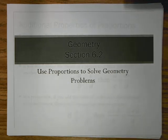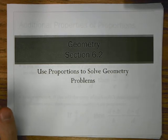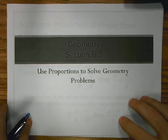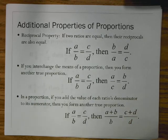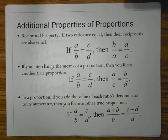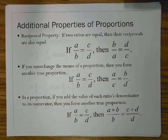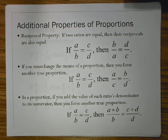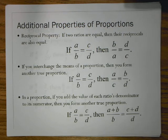We're looking at section 6.2, which is using proportions to solve geometry problems. We start with some properties about proportions. You've already seen section 6.1, where we looked at the cross product property — that tells us we can take the cross product of a proportion to solve it. It may be good to look back at 6.1, because really these properties we don't use so much to solve — they're just things we need to be aware of.